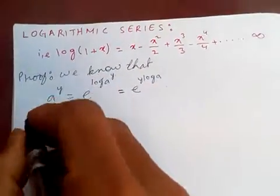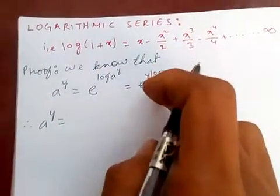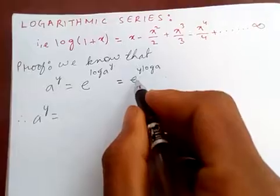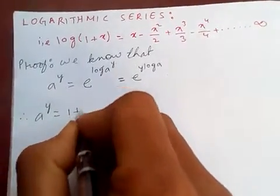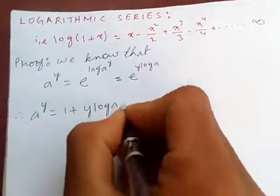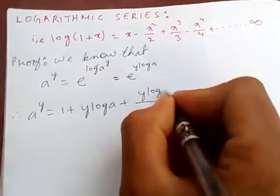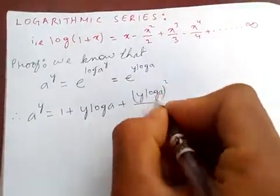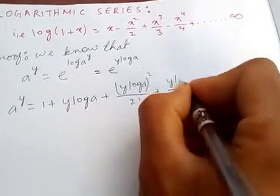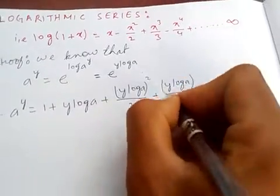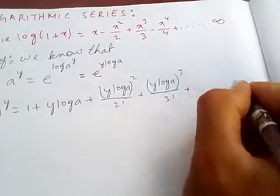Therefore, a to the y, using the exponential series, equals one plus y·log(a) plus (y·log(a)) squared by two factorial plus (y·log(a)) cubed by three factorial, plus and so on up to infinity.